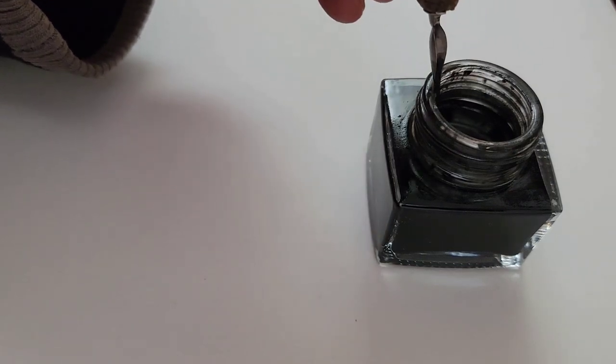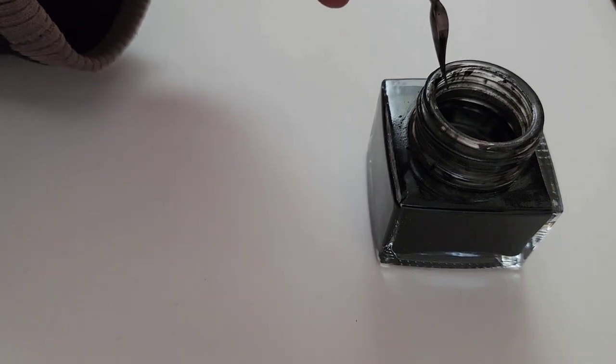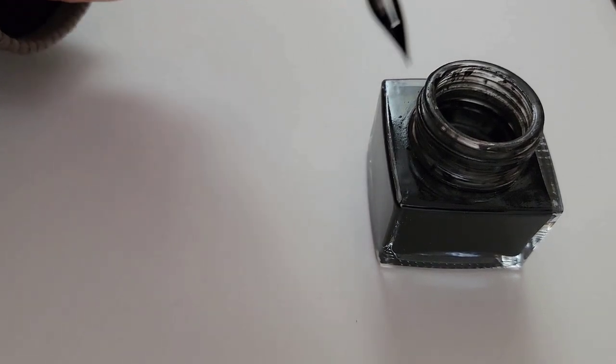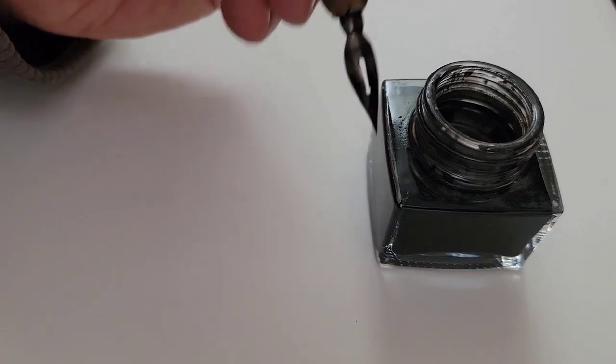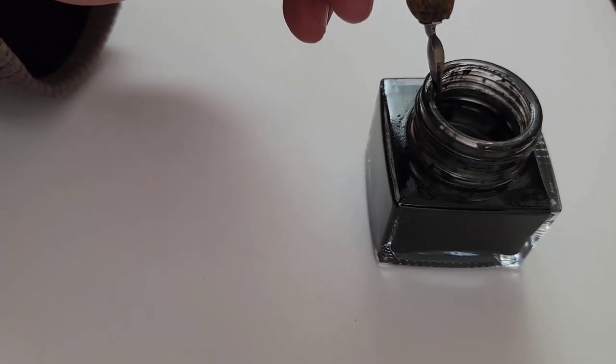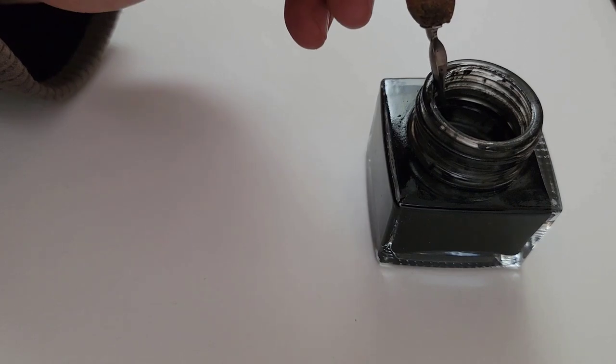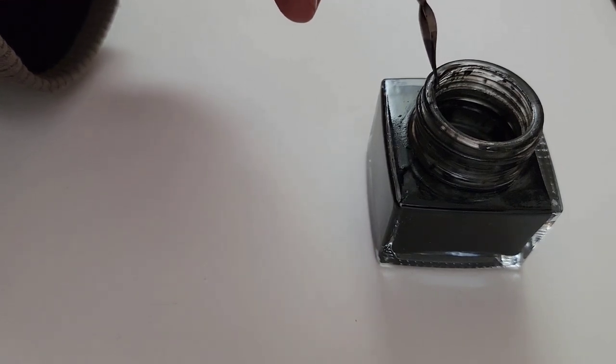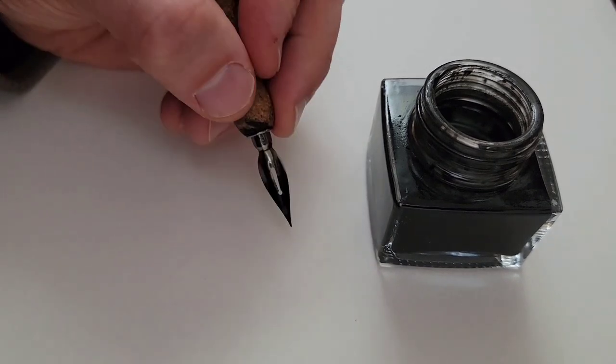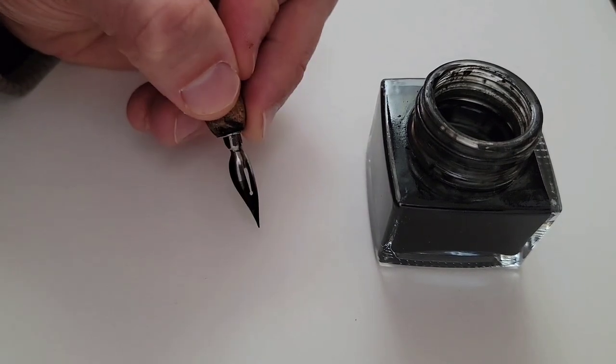That's my rule of thumb. Dip it about halfway into that reservoir, come out. You can kind of wipe the nib a little bit on the rim of the inkwell if you want to make sure that you don't have too much. And I'm wiping the convex side, so the rounded side of the nib on that rim just to get off any excess. And now I'm free to apply that pen to the paper.